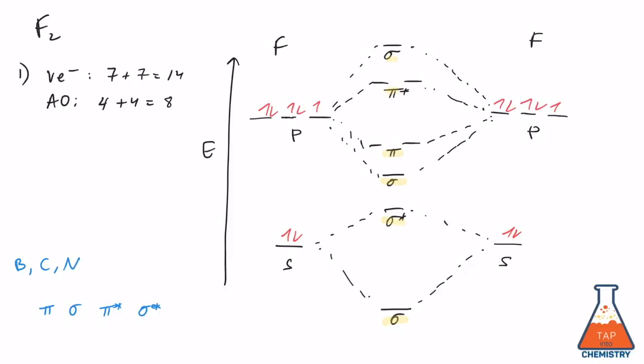The last step is to fill in the 14 valence electrons into our MO diagram. And there you have it. That's our MO diagram for a fluorine molecule.